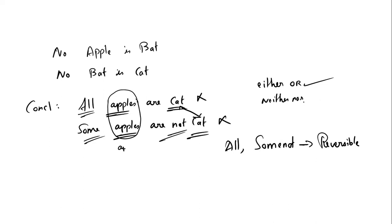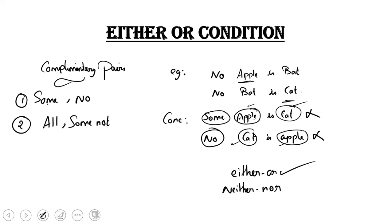For example, some apples are not a cat, some cats are not an apple. So the others are not a cat. In this case, there are two different conditions.